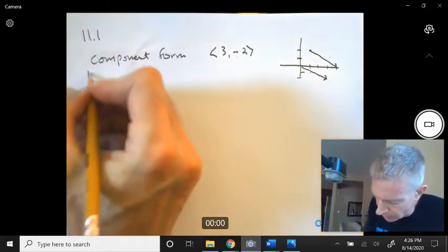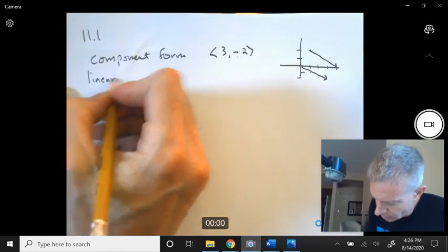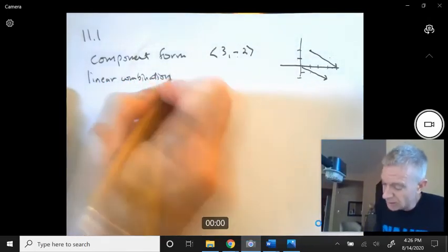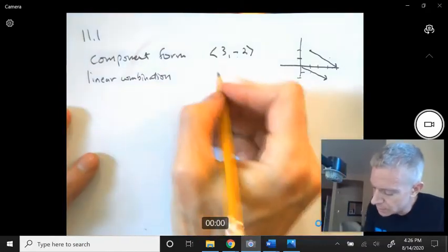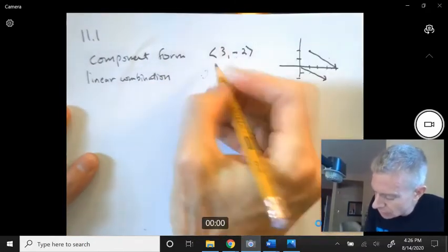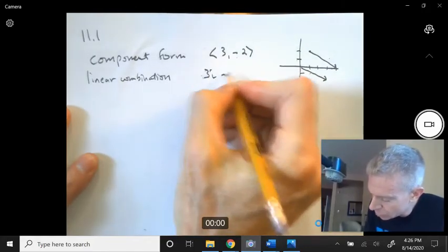The other common form is linear combination form. It's called linear combination because it's a linear combination of the standard unit vectors. So it would look like 3i minus 2j.